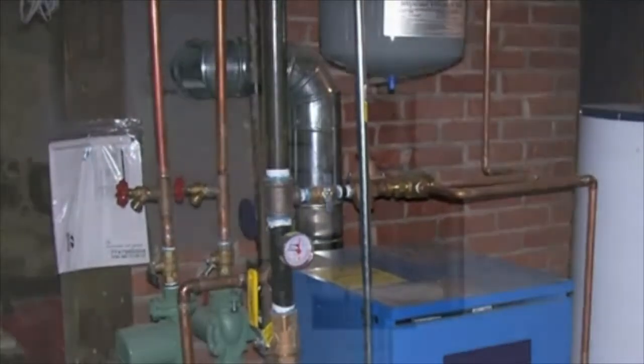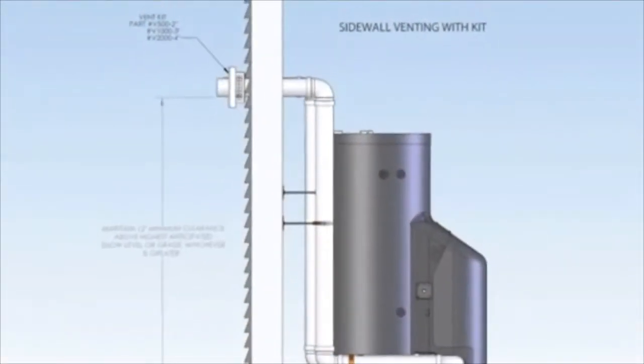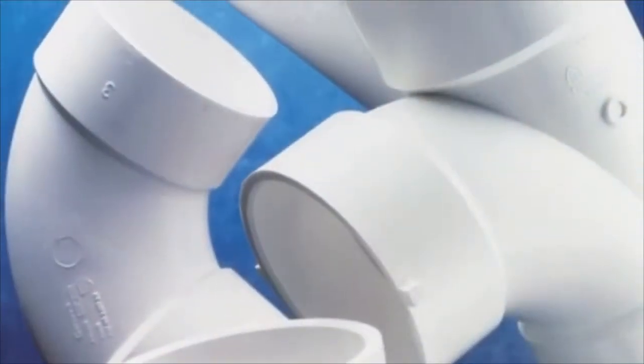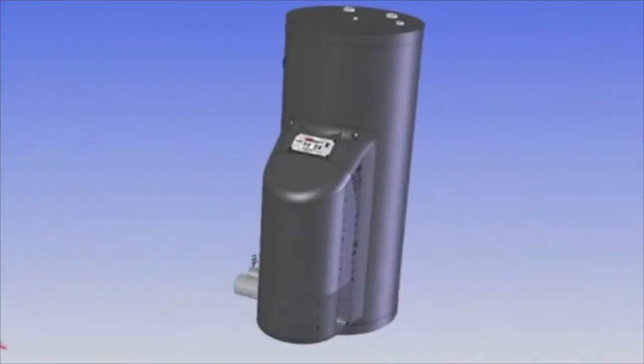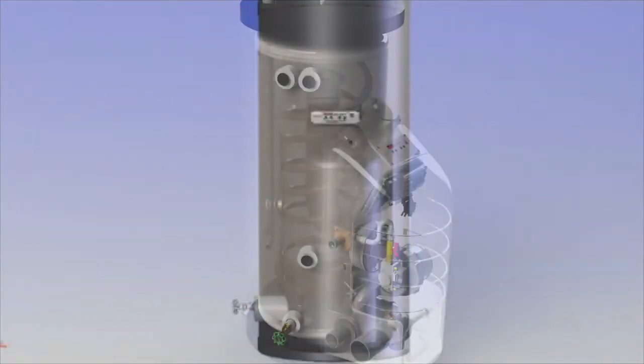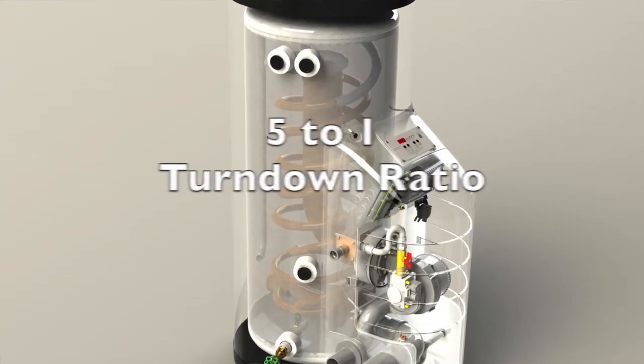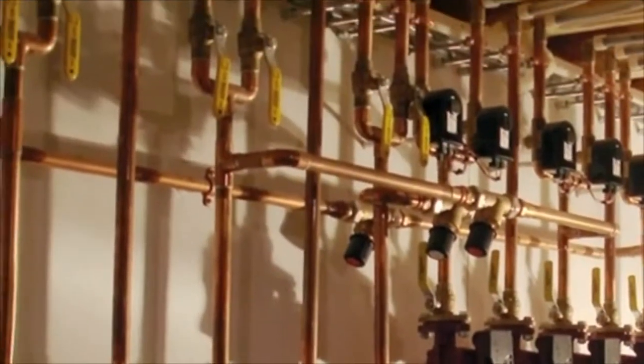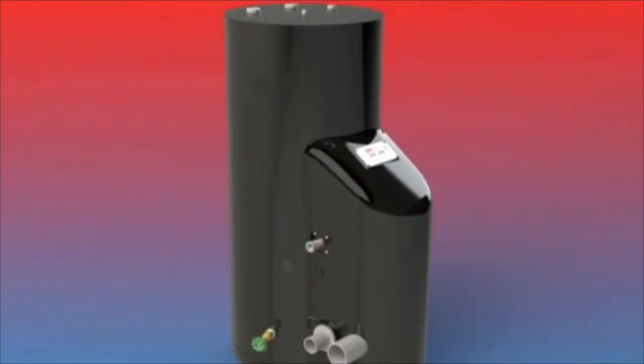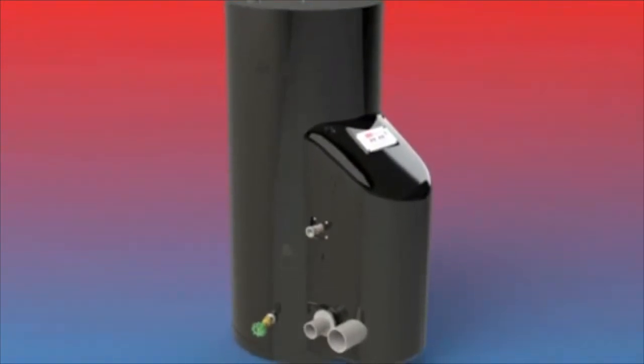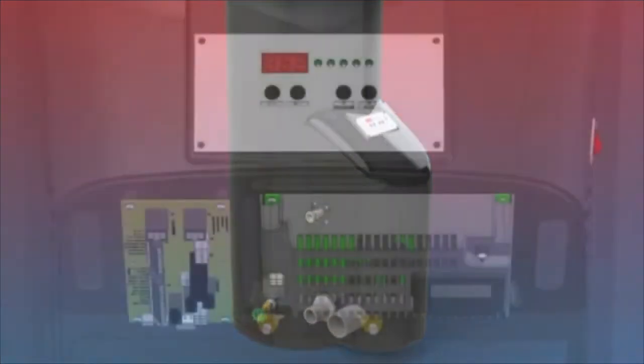The burners are typically controlled by simple on-off technology compared to the Pioneer's modulating burner. Multiple zone systems designed for comfort and efficiency can cause cycling of these units, greatly reducing overall system efficiency.